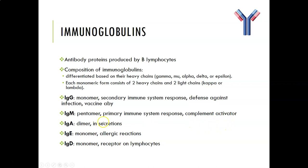IgA is a dimer (two units, tail to tail) and is found in secretions wherever there is mucus. IgE is a monomer with a slightly longer tail than IgG and is prevalent in allergic reactions — if you are allergic to peanuts or shellfish you would be producing IgE. IgD is also a monomer but functions as a receptor on lymphocytes, with its tail end embedded into a white cell. That is the end of the review video — thank you for your attention.